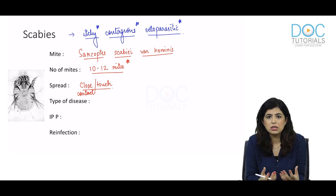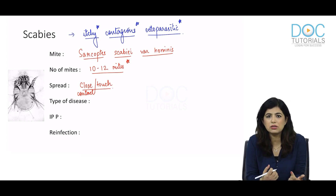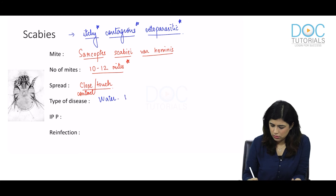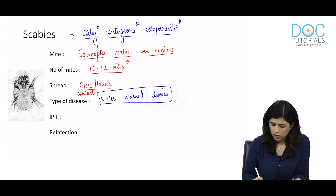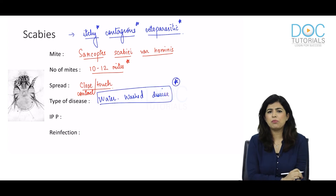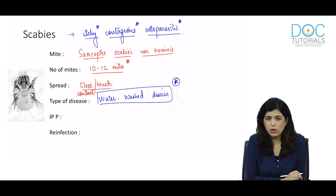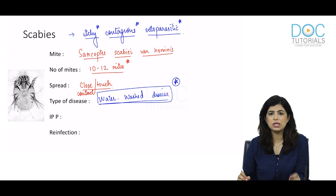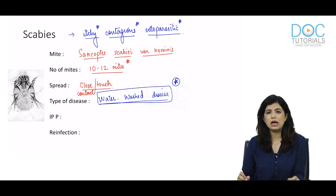Another factor that helps in transmission is lack of personal hygiene — patients not taking a bath. Where there is a lack of water for maintaining personal hygiene, lack of sanitation, and overcrowding, there are higher chances of ectoparasitic infections. This is why scabies is also called a water-washed disease — a very important point also covered in community medicine.